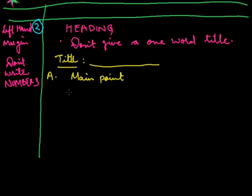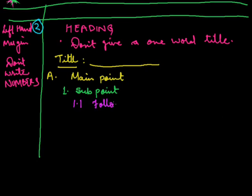You will make one sub-point and write 1.1. Then write a sub-sub point. This is the main point, this is the sub-point, and this is the sub-sub point. You should follow this format — only then will you get marks.